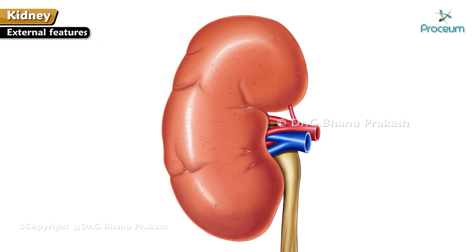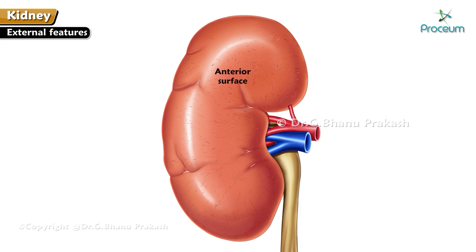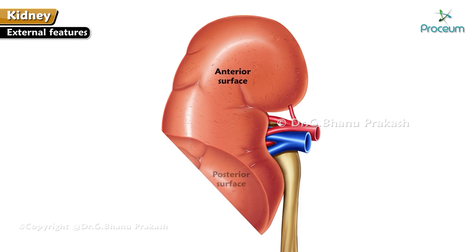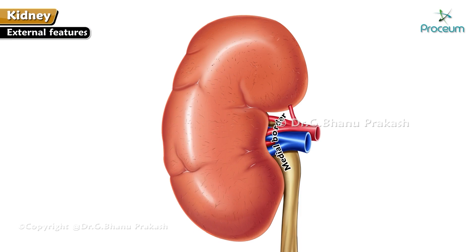External features: Each kidney has two poles — superior and inferior — two surfaces — anterior and posterior — two borders — medial and lateral — and a hilum.